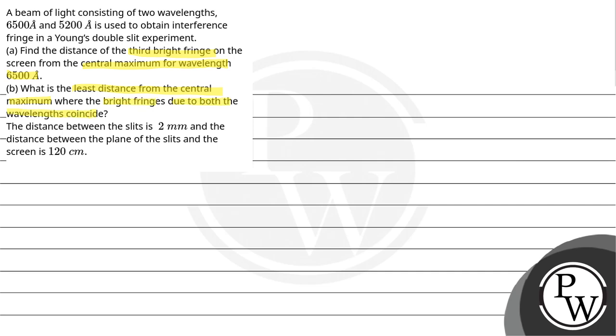The distance between the slits is 2 mm and the distance between the slits and the screen is 120 cm. So our key concept is during interference, fringe width is given by the relation beta equals lambda D upon d.